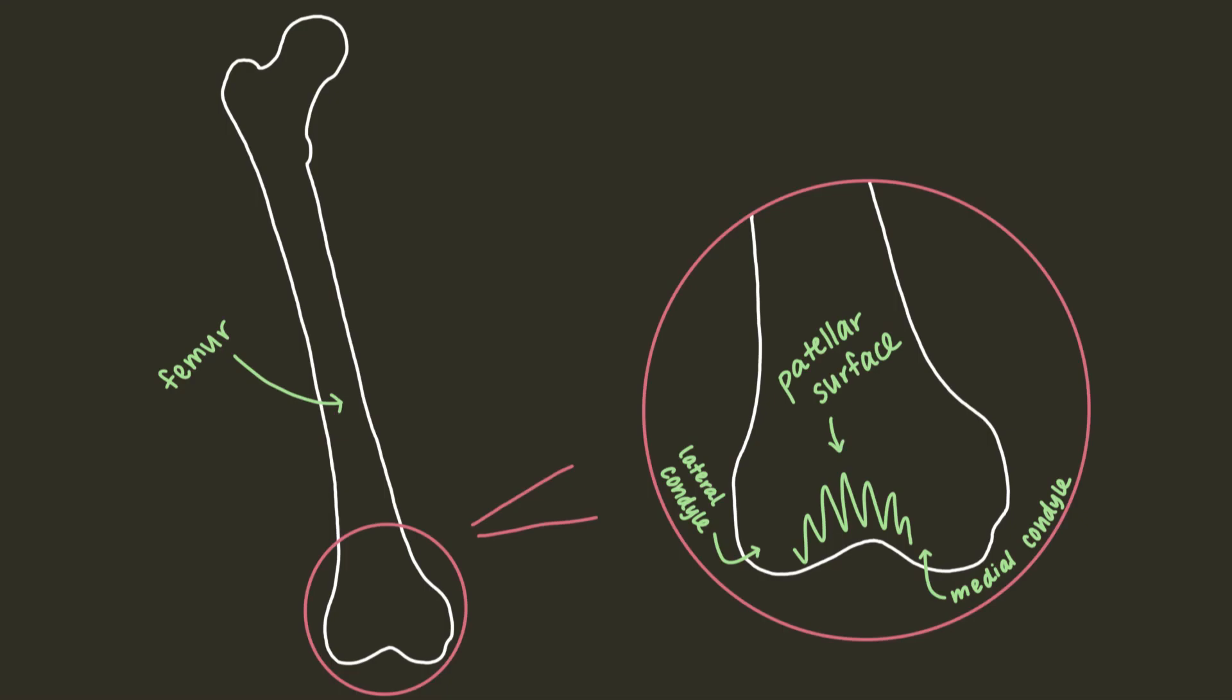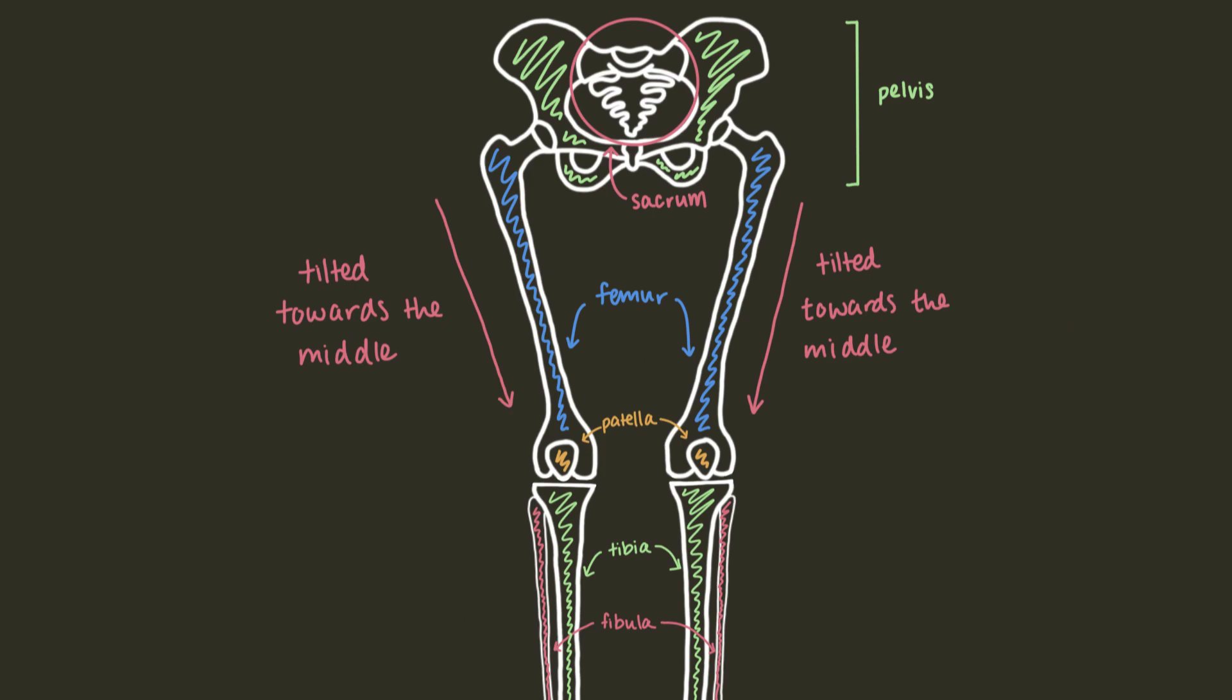On the distal end of the femur, that is the end of the femur closer to the knee, there are these two knobby-looking things. They're known as the lateral and medial condyles, and they connect with the tibia, the leg bone. There's also another bone that makes up the leg called the fibula, but it's not important for this discussion, so I'll save it for another video. Sorry, fibula.